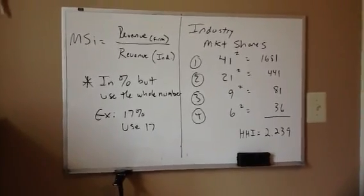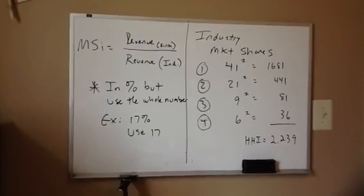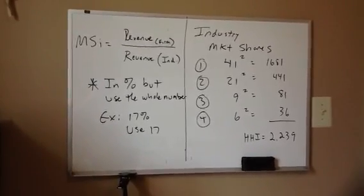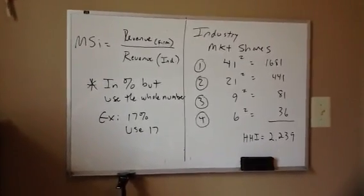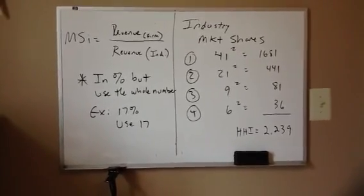So, we would say that this industry at 2,239 is oligopolistic, and again, the CR4 of 77 and the Herfindahl of 2,239 would lead us to that conclusion. The importance of the Herfindahl is that because we're squaring the market shares, that squaring effect is picking up the distribution between competitors.